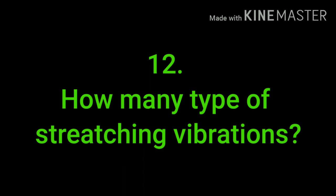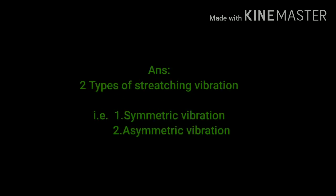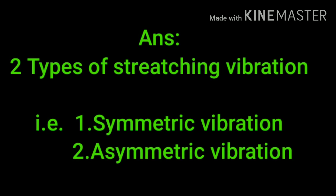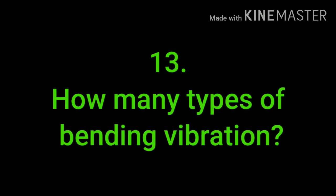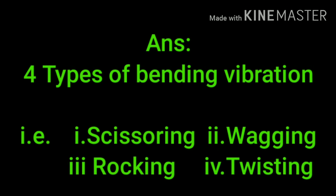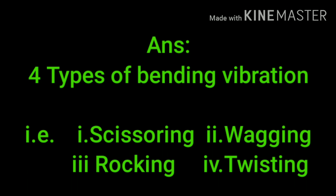How many types of stretching vibrations are there? There are two types: symmetric stretching and asymmetric stretching vibrations. How many types of bending vibrations are there? There are four types of bending vibrations: first is scissoring, second is wagging, third is rocking, and fourth is twisting.